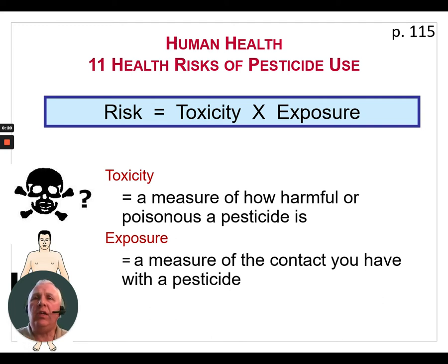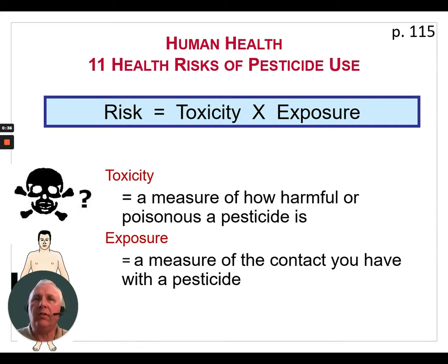There are two things we need to consider. Look at this formula: one is the toxicity of the pesticide, and multiply that by our exposure to the pesticide. Toxicity is defined as a measure of how harmful or poisonous a pesticide is — it's often measured in LD50. Exposure is a measure of the contact that you have with that pesticide.